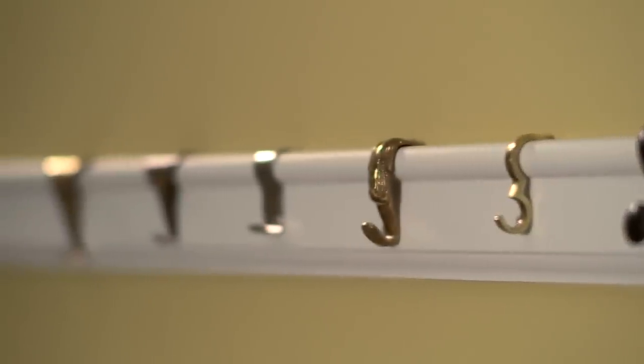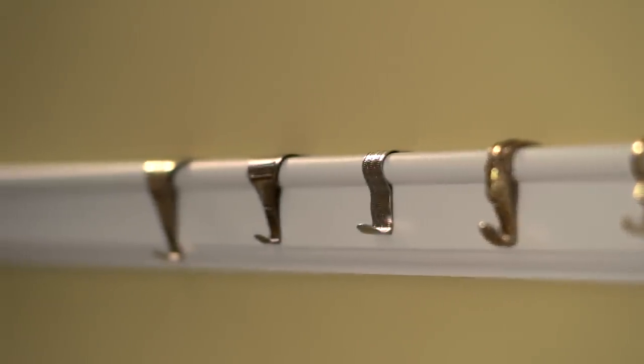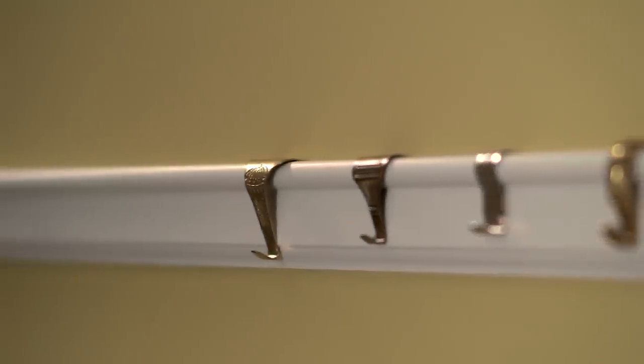Picture hooks come in a wide variety of shapes and sizes, and most of them fit most varieties of picture rail molding. Cast brass hooks are better for heavier items, while the stamped hooks are better for lighter items.